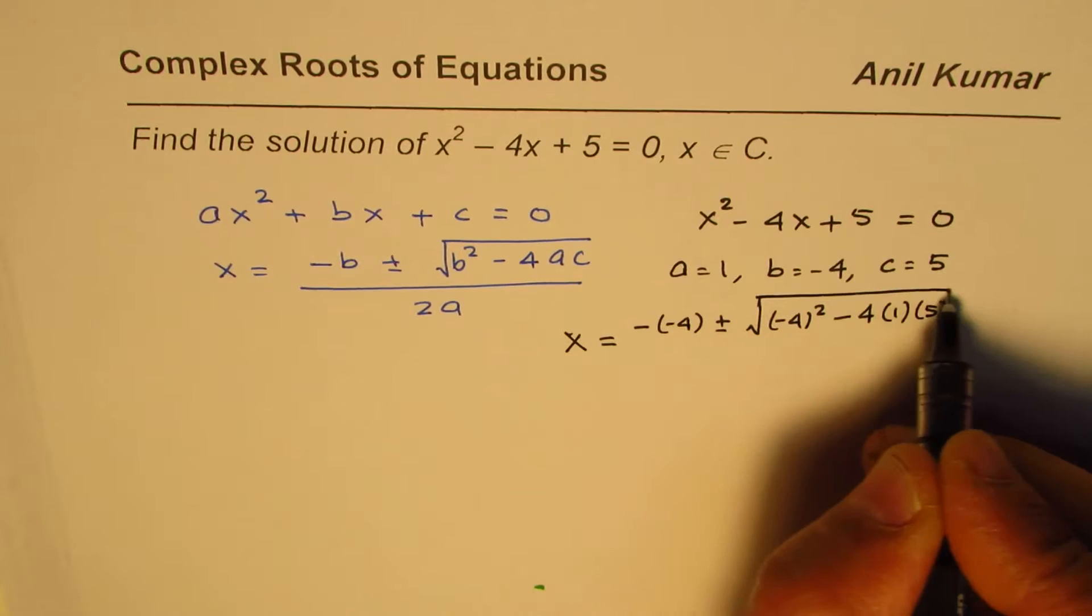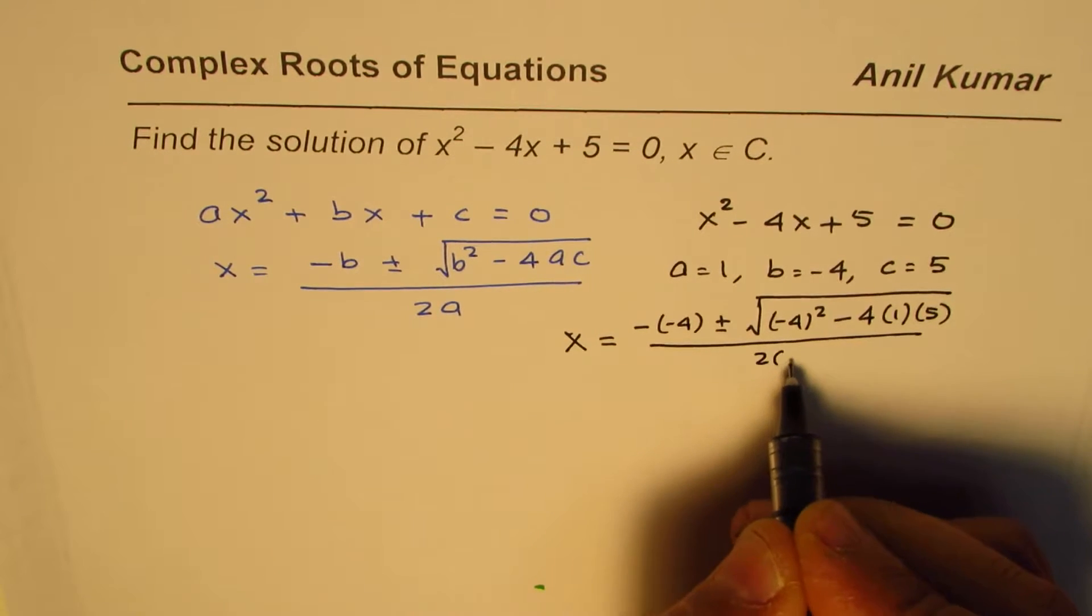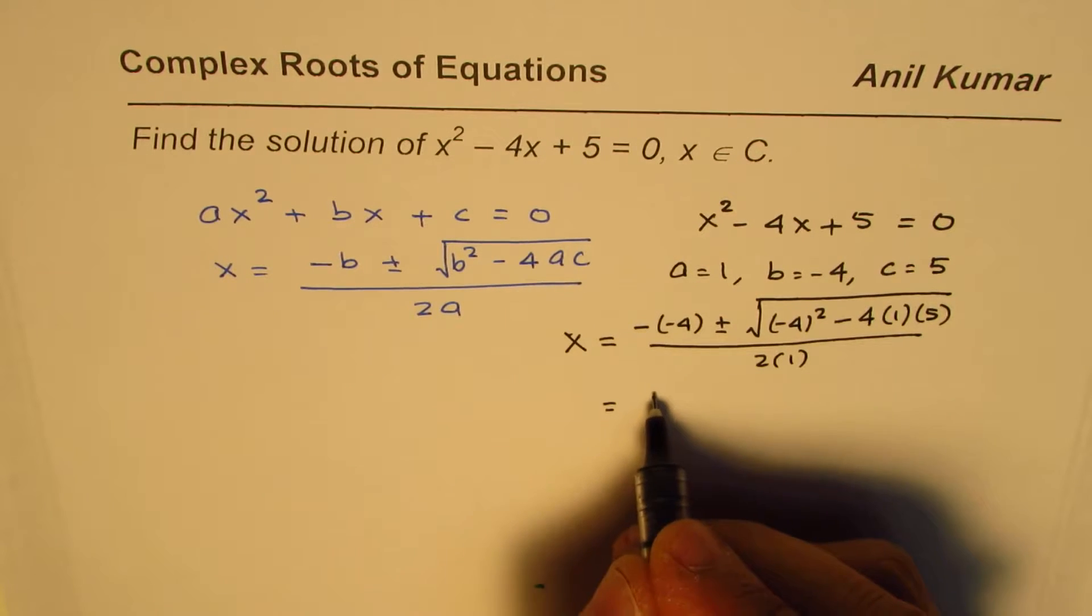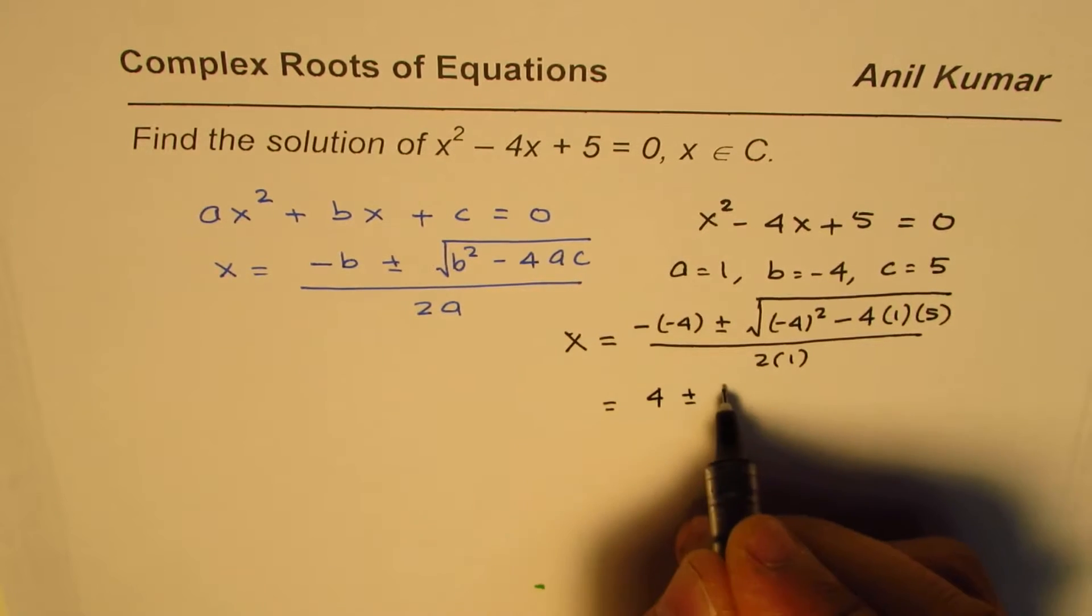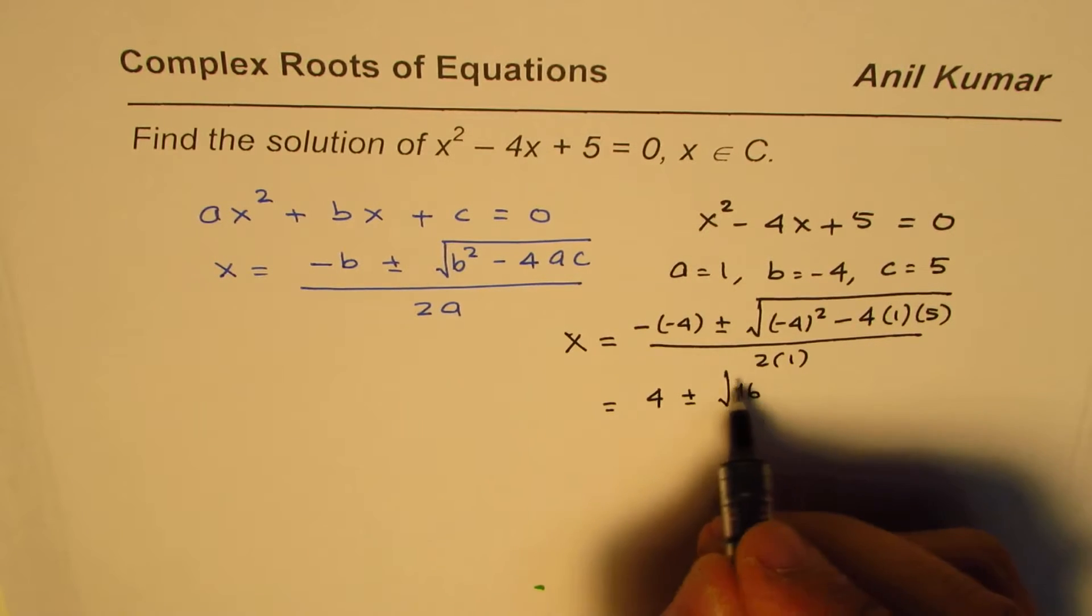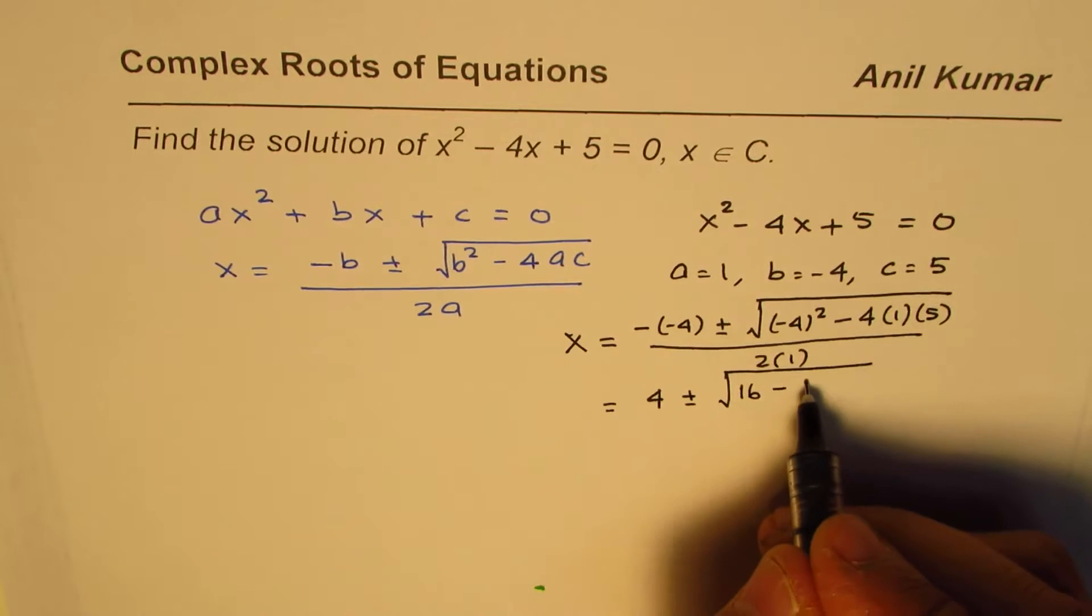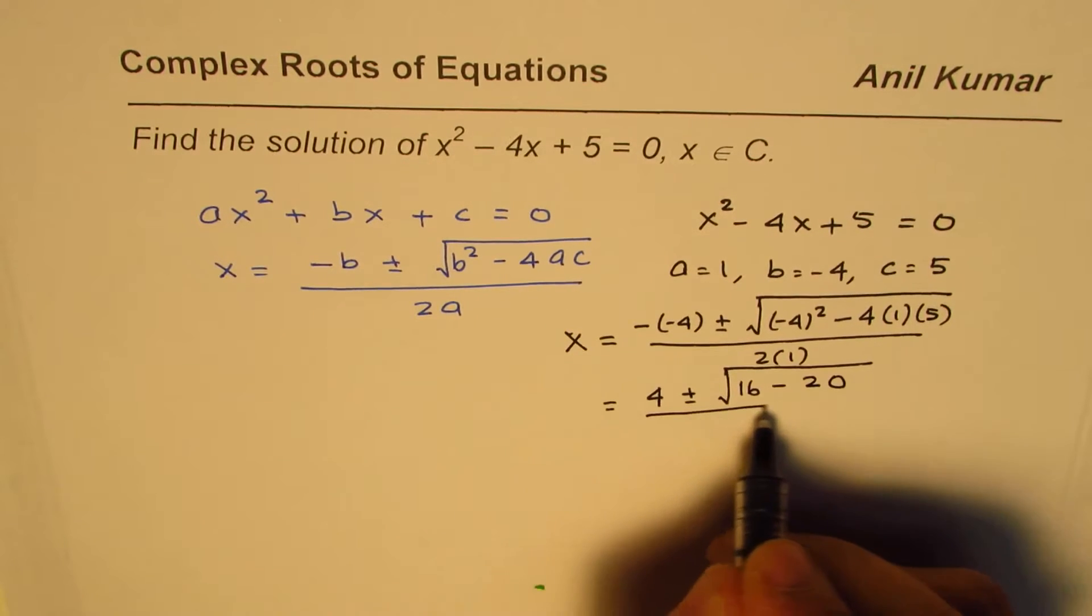That gives you minus and minus makes it plus 4, plus minus square root of—the square of a negative number is positive—we get 16 - 4 times 5 is 20, divided by 2.